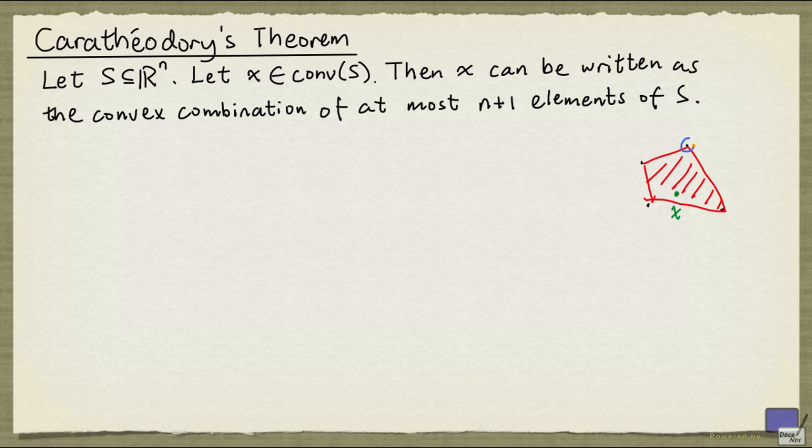In this case, x cannot be written as the convex combination of these three points, but it can be written as the convex combination of these three points. So this theorem is not automatic, there is indeed something to prove.